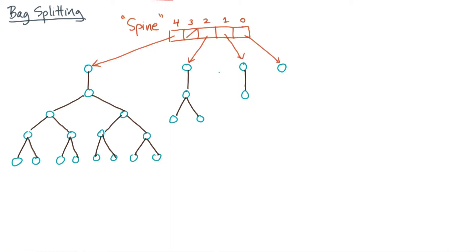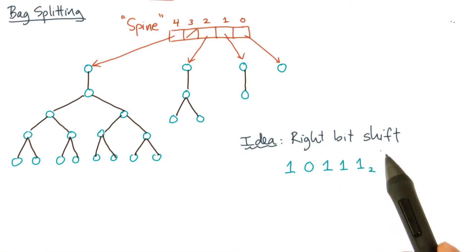So far we've relied on using patterns from binary arithmetic to derive algorithms for bag operations. That begs the natural question: what's the right analogy for splitting in binary? Here's an idea: what about right bit shifting?